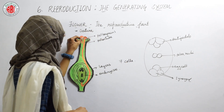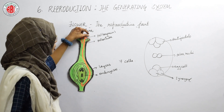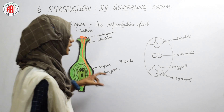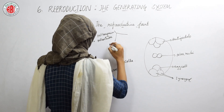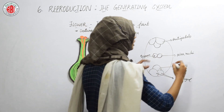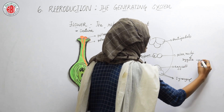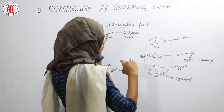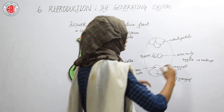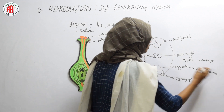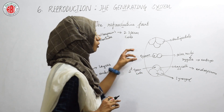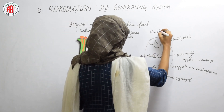When pollen grains reach the stigma, a pollen tube forms and reaches the embryo sac. The pollen grains show the presence of two sperm cells. The first sperm cell fuses with the polar nuclei, and this fusion results in the formation of a zygote; after cell division, this zygote develops into an embryo. The second sperm cell fuses with the egg cell of the embryo sac, resulting in the formation of endosperm, which provides nourishment to the embryo. Since two sperm cells are involved in fertilization, this is called double fertilization.